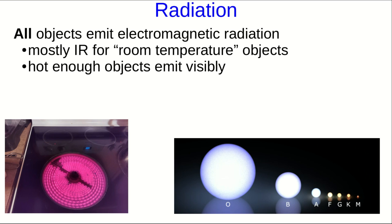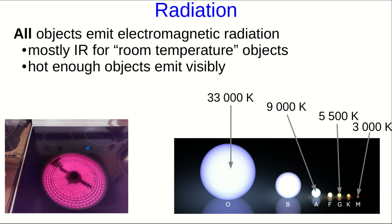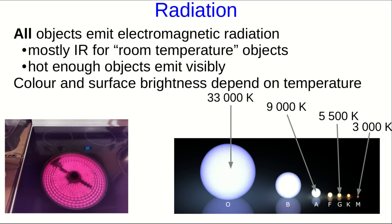This is particularly spectacular with stars. And, for example, one of the things you can then see is that the color that's emitted depends on the temperature of the object. So both color and surface brightness, it turns out, will depend on temperature.